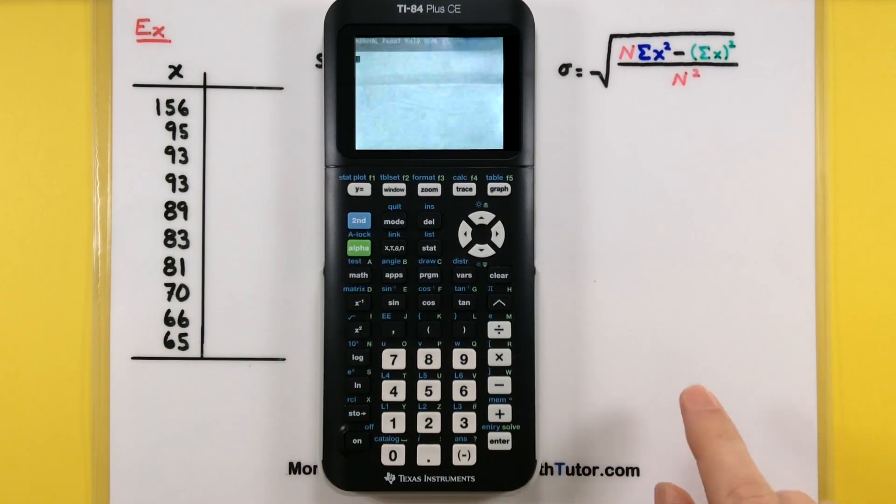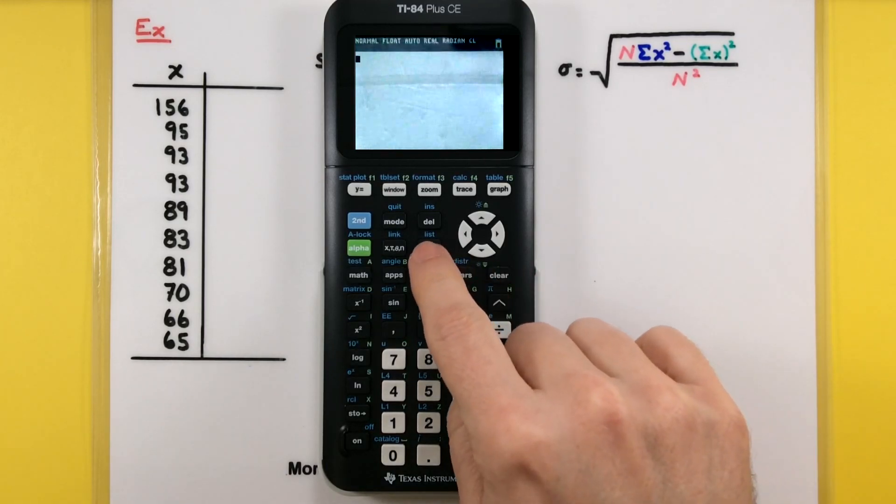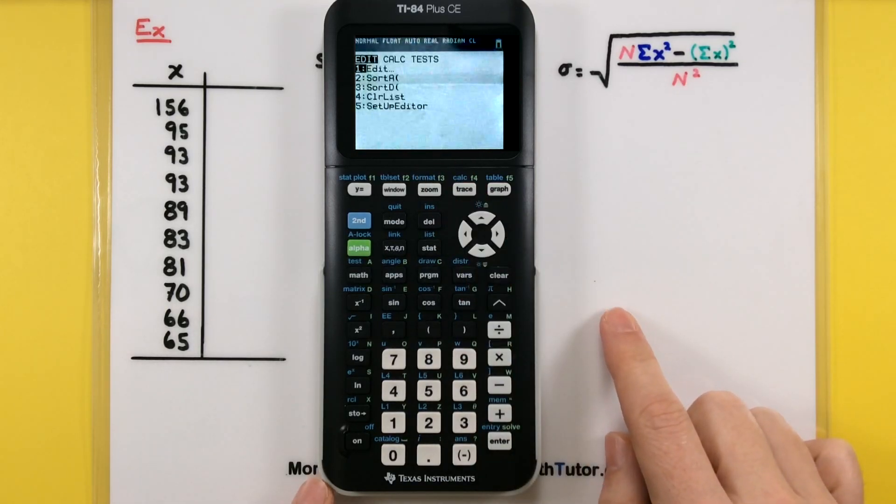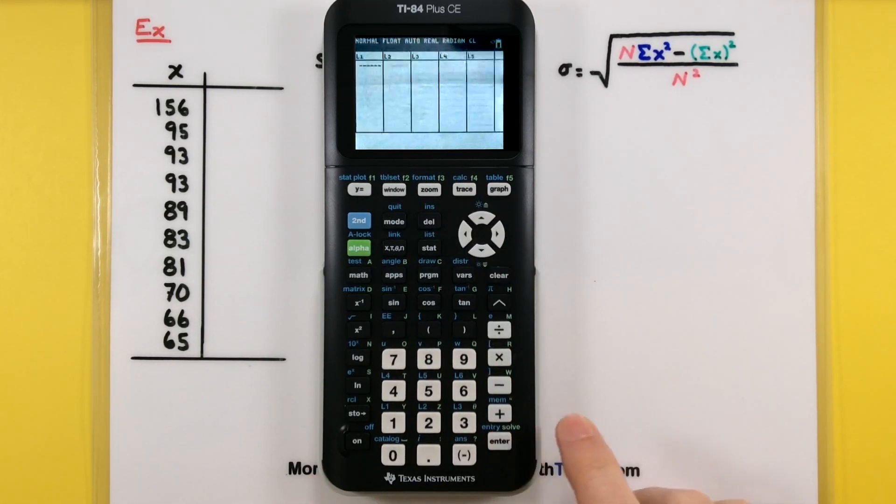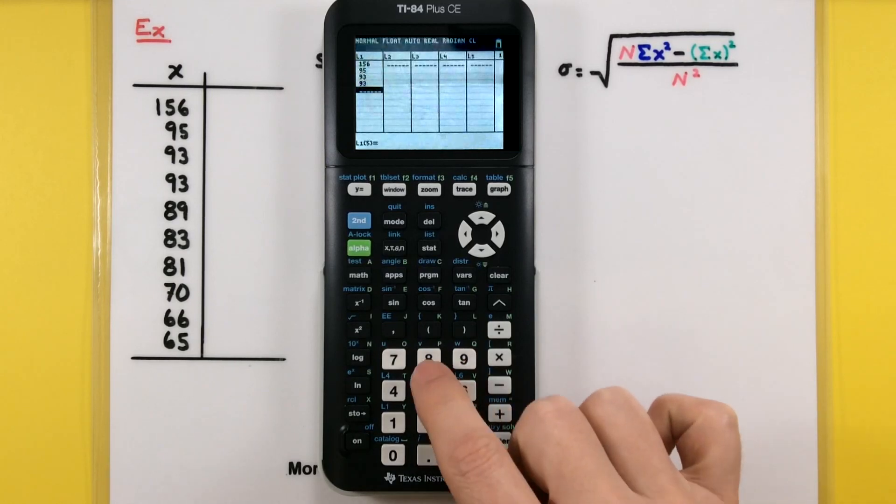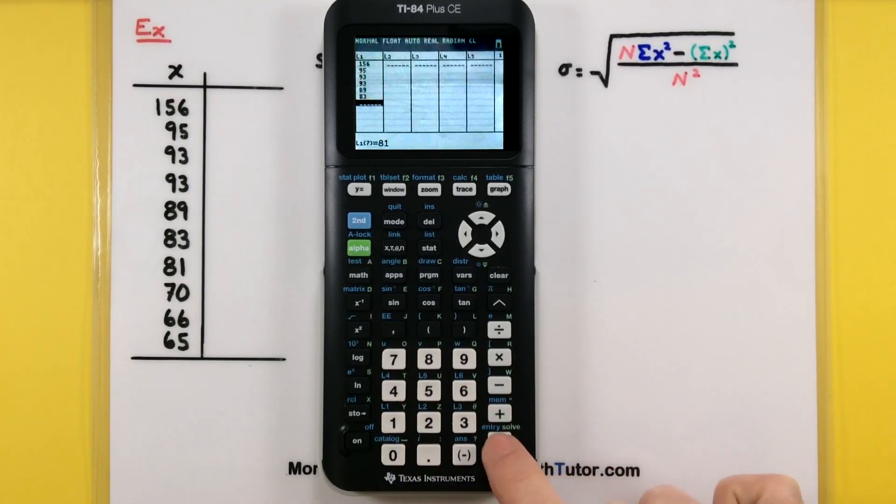All right, the first part of this as soon as we turn on is we need to get to our list. So in order to do this we'll press STAT and you'll notice that the first option there says edit. So let's go ahead and press enter and this will bring us to our list. So we'll just type in each number one at a time and every time we're done typing in a number go ahead and press enter and it'll bring us down to the next line.